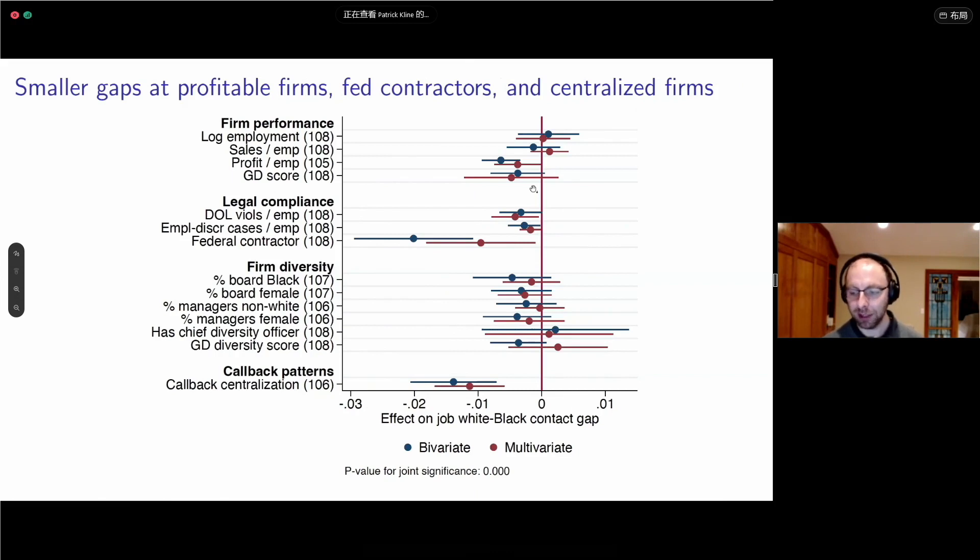However, at the firm level, we find lots of important correlates of firm-wide discrimination. The first one that's a classic from economic theory, going back to Becker's dissertation, is that the profitability of a firm is a negative predictor of how discriminatory it is. Put differently, the more racist firms appear to be less profitable. Interaction with the federal government is a negative predictor of discrimination. Whether you've been fined or sued for discrimination or other labor violations makes you less likely to discriminate. Federal contractors, as we would expect, are much less likely to discriminate.